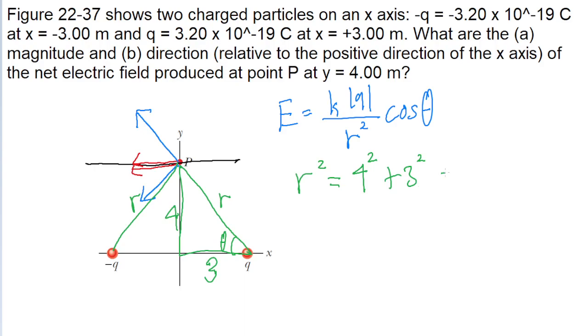Four squared plus three squared is equal to 25. So R is equal to the square root of 25, which is 5.